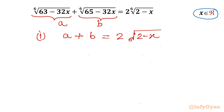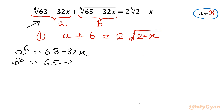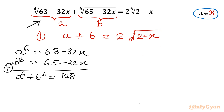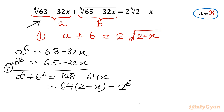Now I will use our substitution. I can write a⁶ equal to 63 minus 32x, and b⁶ equal to 65 minus 32x. Once I add both equations, a⁶ plus b⁶ equals 128 minus 64x. Taking 64 as common, I can write 64 times (2 minus x). Now 64 can be written as 2⁶, so this becomes 2 times the 6th root of (2 minus x), all raised to the 6th power.